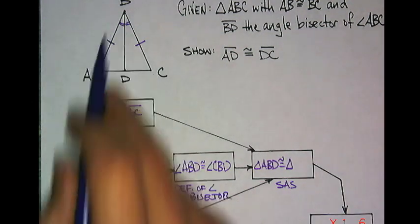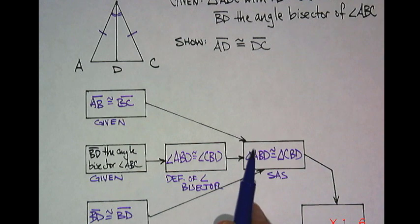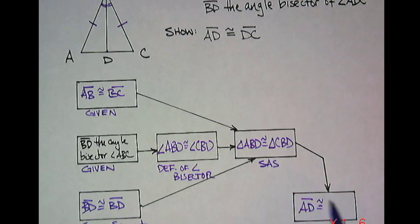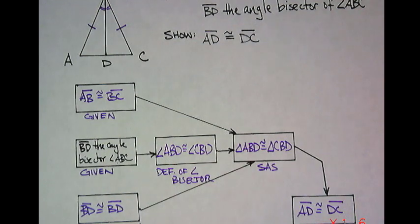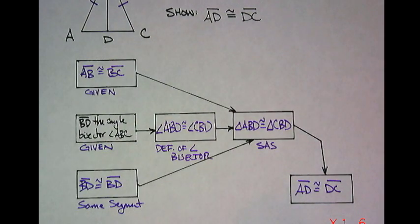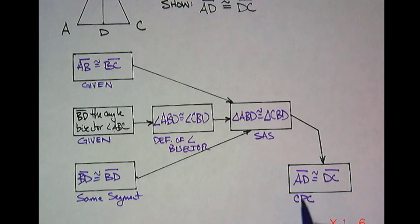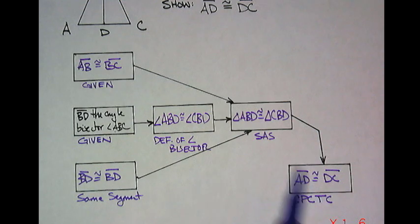Now that the triangles are congruent, we know their parts must be congruent. AD in this triangle is congruent to DC in this triangle. What reason do I know? I kind of hinted to it—the parts. We put down the corresponding parts of congruent triangles are congruent: CPCTC. That always will follow after you prove the triangles are congruent. You can't have CPCTC prior to proving two triangles are congruent.